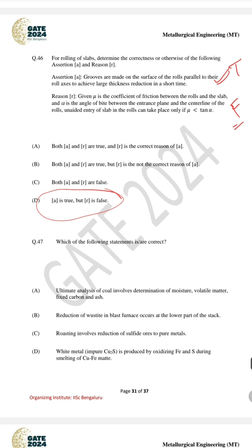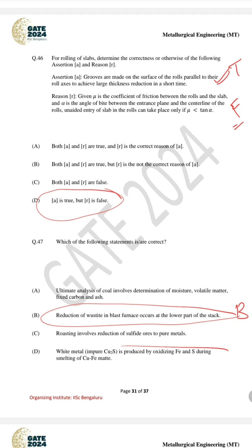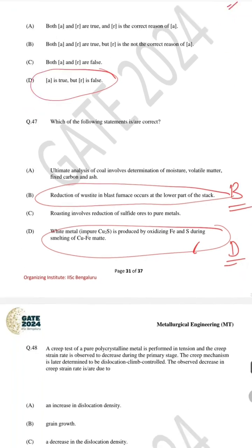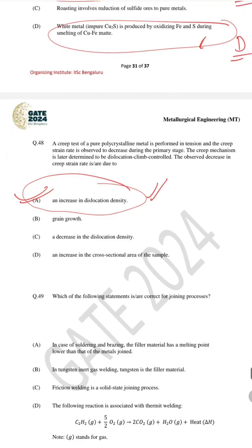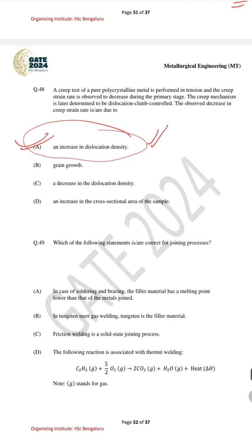For question number 47 the correct answer is B, option D1. For question number 48, regarding the creep test, the correct answer is an increase in dislocation density.